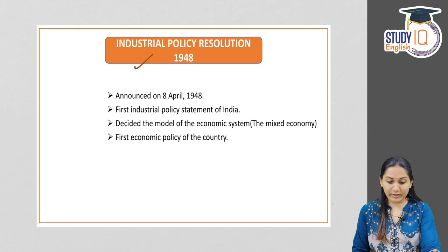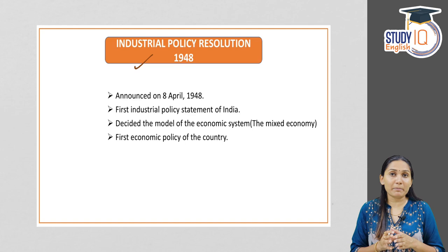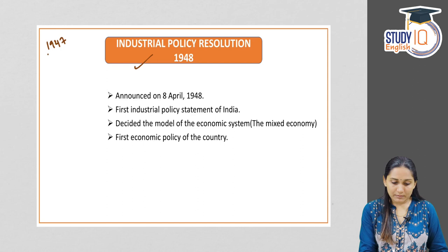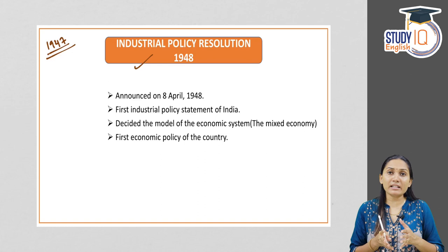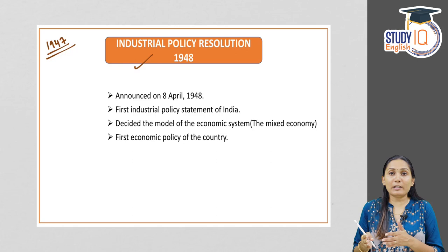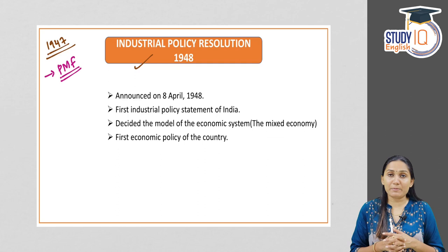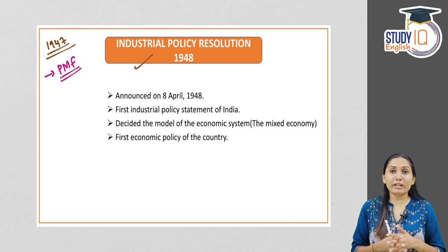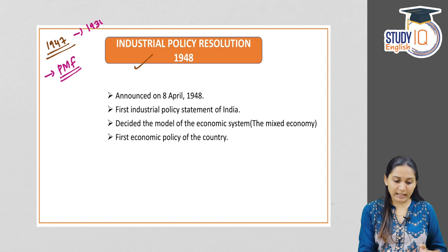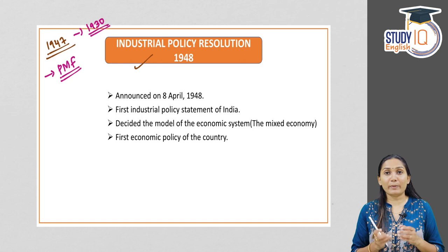The first one is the Industrial Policy Resolution of 1948. Before we move into that, a quick recap of the background. In 1947, when India got independence from colonial rule, one of the major decisions in the minds of the government and political leaders was to consider industry as the prime moving force of the Indian economy. From 1930 onwards, political leaders were certain that after independence, industry would be the prime moving force.